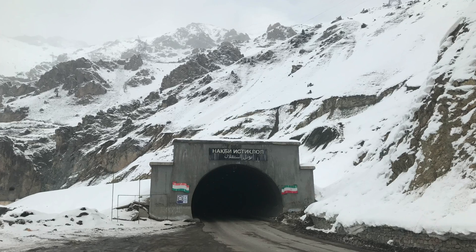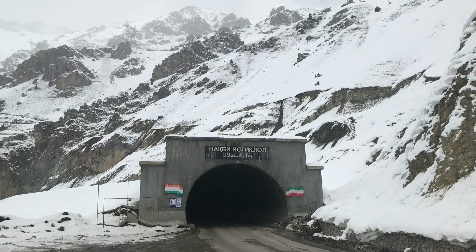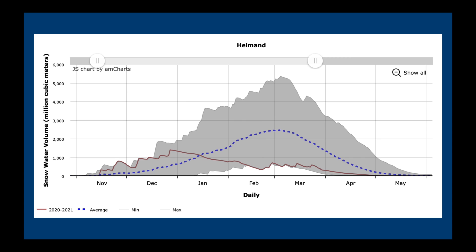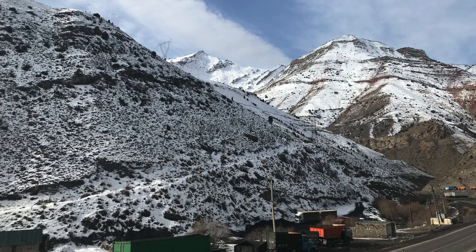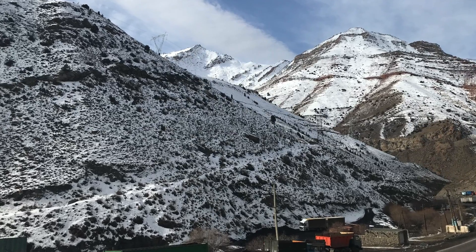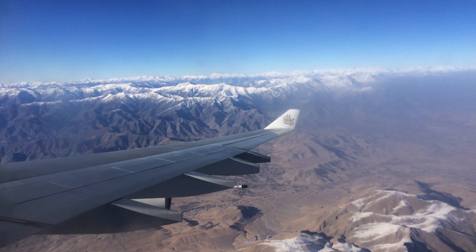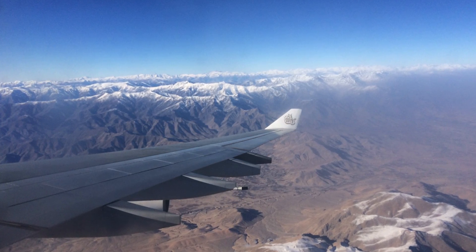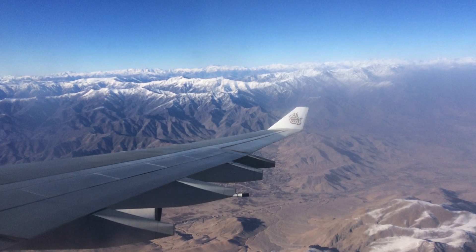For water resources planners, it is really important to know how much snow is accumulated in the mountains at the end of winter, so that they can predict how this translates into water available for downstream users during the irrigation season. One way is to go and measure how much snow there is in different places — a traditional approach used for hundreds of years by the Mirabs of Afghanistan. However, getting around the mountains takes a lot of time, and looking from a plane or helicopter is also quite expensive.